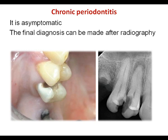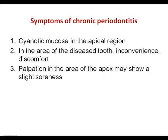Chronic periodontitis is most often an asymptomatic disease — the patient has no symptoms at all. The final diagnosis is usually made after radiography based on characteristic X-ray findings. Possible symptoms of chronic periodontitis may include cyanotic mucosa in the apical region of the diseased tooth, inconvenience or discomfort, or slight soreness on palpation in the area of the apex — not true pain, just slight sensations.